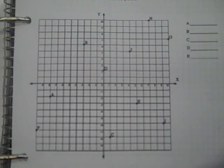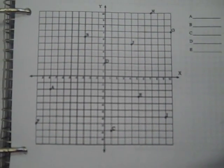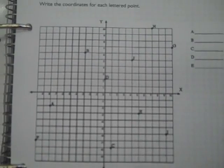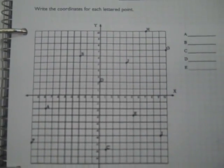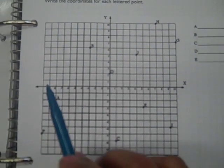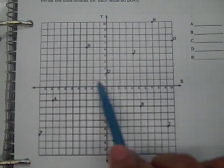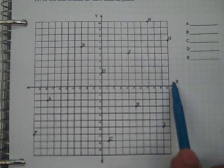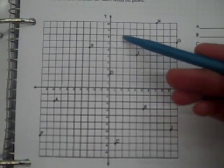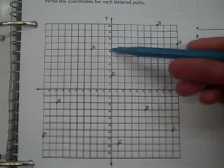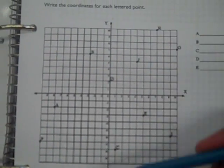Okay Kipsters, today we're going to be plotting points on a coordinate grid. The most important thing to know is that the x axis goes horizontally and is labeled x, and the y axis goes vertically and is labeled y.